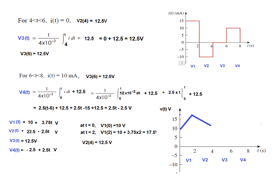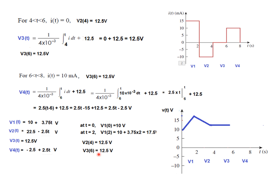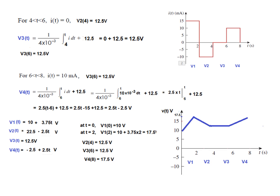The third part is constant, so we draw a flat line at 12.5 from T = 4 to T = 6. Finally, for V4, putting T = 8 gives approximately 17.5, so from 12.5 we move up to 17.5. That is how you plot the voltage curve.